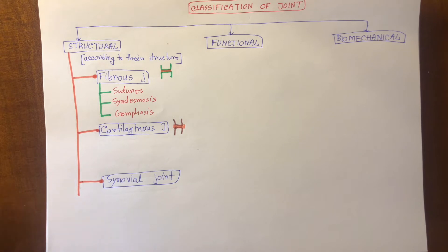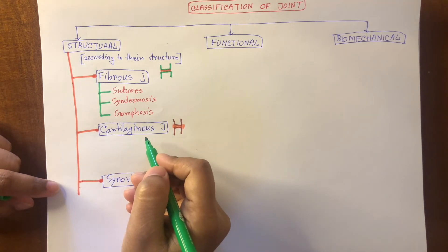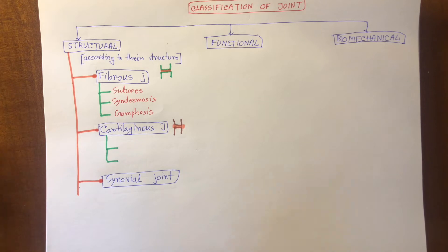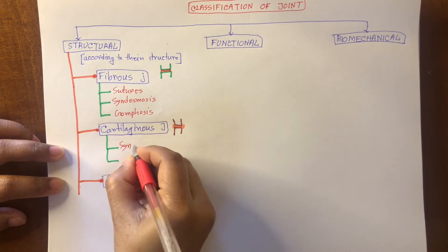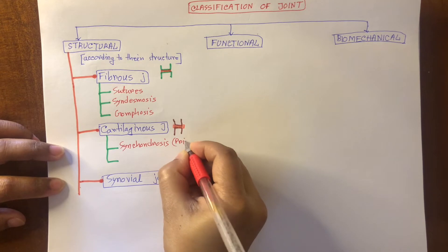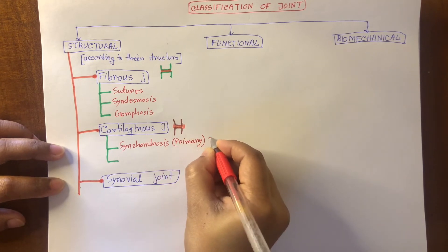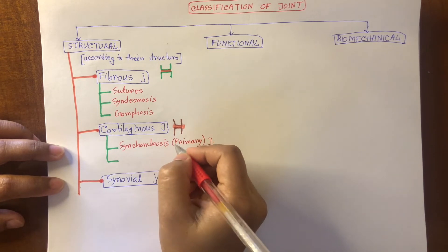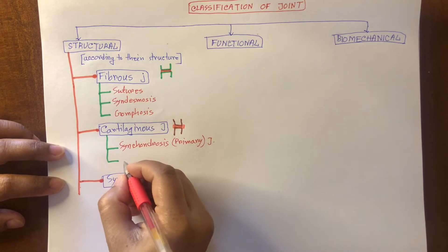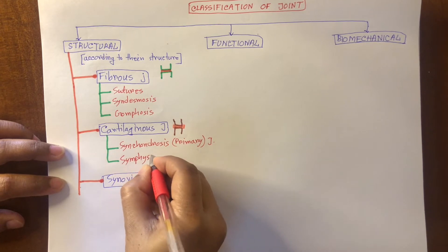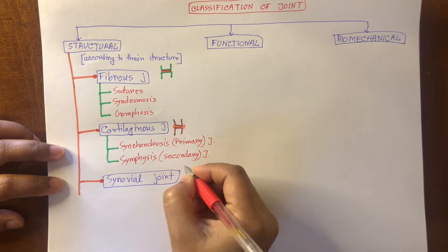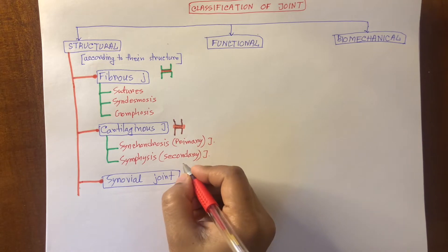Cartilaginous joints can be sub-classified into two types. These are: synchondrosis, or primary cartilaginous joint, where bones are connected with hyaline cartilage; and symphysis, or secondary cartilaginous joint, where bones are connected by fibrocartilage.